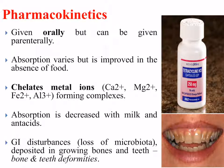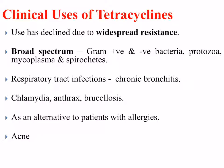GI disturbances occur due to the loss of microbiota. Because of its ability to chelate metal ions, tetracycline can actually deposit in growing bones and teeth and in some cases lead to bone and teeth deformities. Clinically, its use has declined due to widespread resistance. It tended to be broad-spectrum, used against gram-positive and gram-negative bacteria, and also some mycoplasma, protozoa, and larger multicellular organisms. It was often used for respiratory tract infections, chronic bronchitis in particular, and as an alternative for patients with allergies.